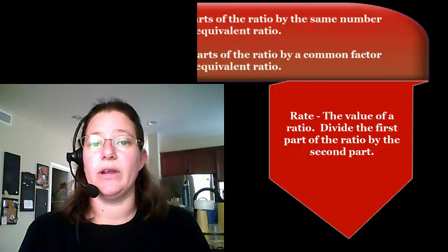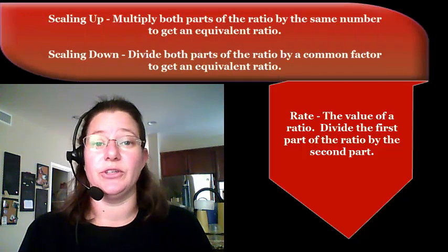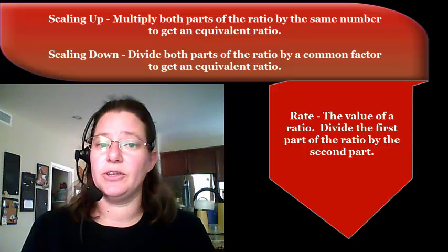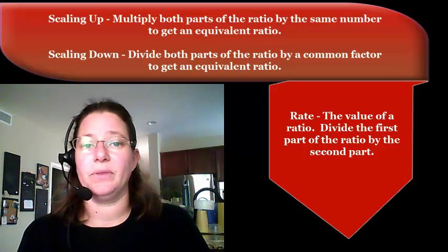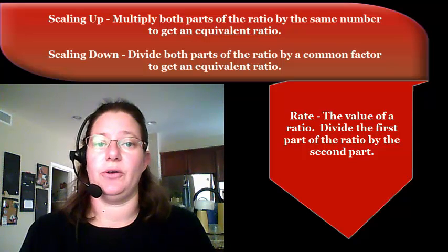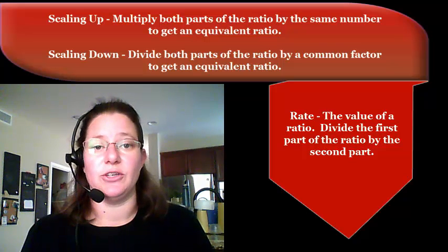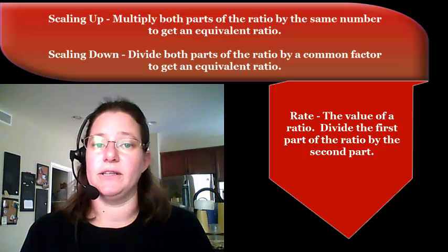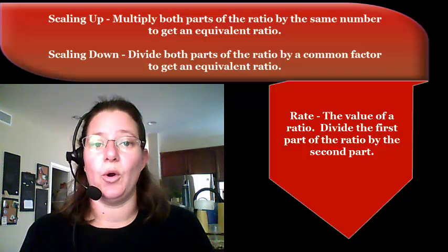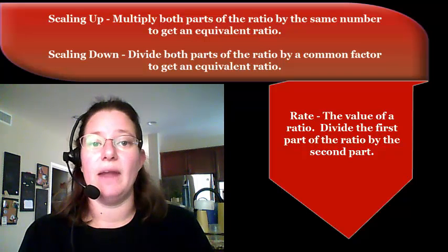The rate of a ratio is really just the value of the ratio. You take the first part of the ratio and divide it by the second part. We can use these rates or values of the ratio to compare different ratios. We can see if one is bigger or smaller than the other, or you can take more than two and put them in order.